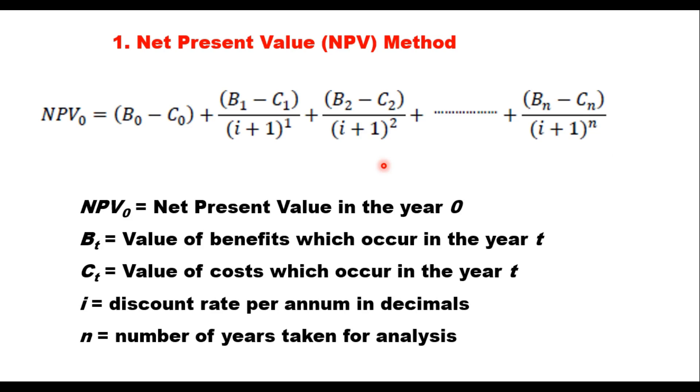Now here in this equation, NPV is calculated as benefit minus cost. This is zero year and the first year, second year and nth year. For each year, you calculate what the benefit and what the cost associated with this year. And i is the discount rate per annum in decimals. N is the number of years which will be considered for the analysis.